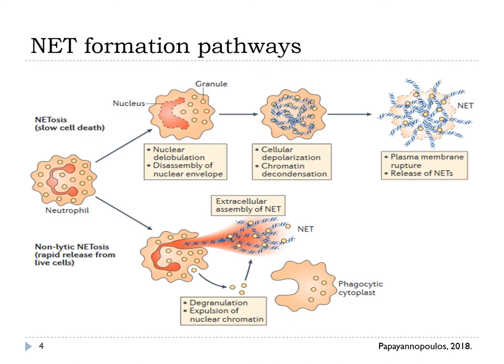There may be two processes for NET release: suicidal NETosis and vital NETosis. In suicidal NETosis, the nuclear envelope disassembles and nuclear chromatin decondenses into the cytoplasm of intact cells, mixed with cytoplasmic and granule components. The plasma membrane then permeabilizes and NETs expand into the extracellular space three to eight hours after neutrophil activation.